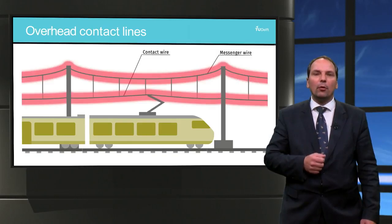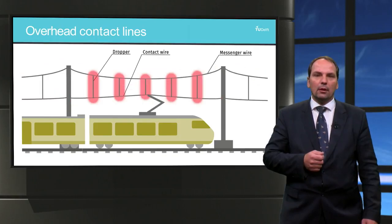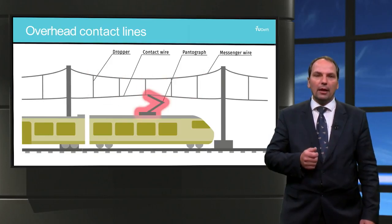the contact wire is supported by a secondary wire which forms a catenary shape. This so-called messenger wire is used to keep the contact wire as level along the track as possible.